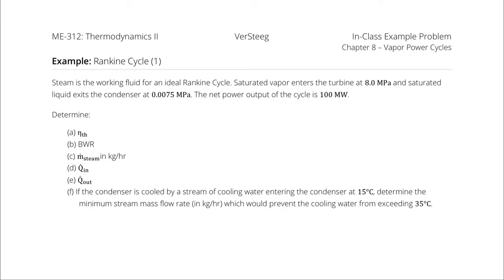Steam is the working fluid for an ideal Rankine cycle. Saturated vapor enters the turbine at 8 megapascals, and saturated liquid exits the condenser at 0.0075 megapascals. The net power output of the cycle is 100 megawatts. Determine the thermal efficiency, the backwork ratio, the mass flow rate of steam in kilograms per hour, the rate of heat addition, the rate of heat rejection, and if the condenser is cooled by cooling water entering at 15°C, determine the minimum stream mass flow rate in kilograms per hour to prevent the cooling water from exceeding 35°C.